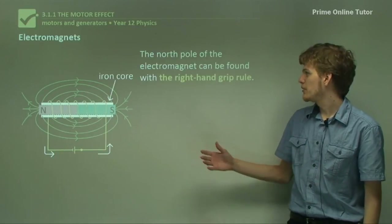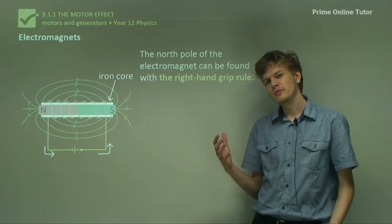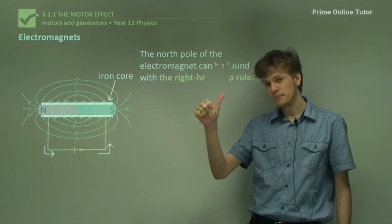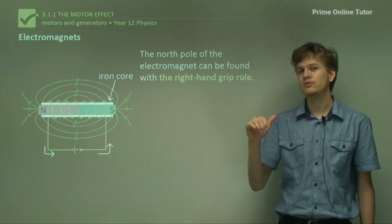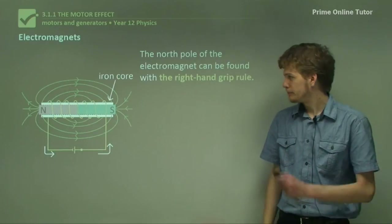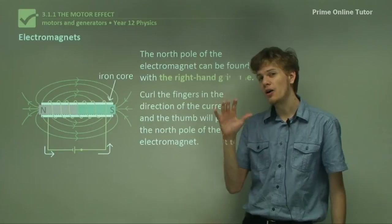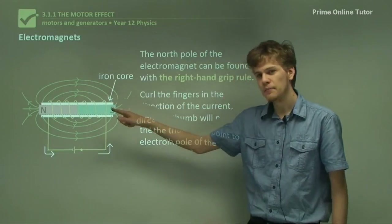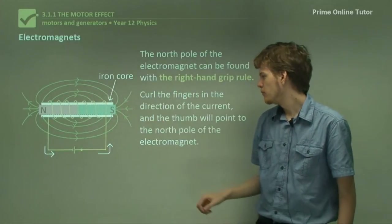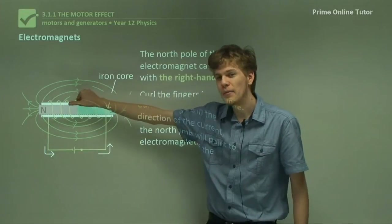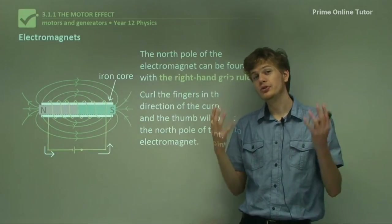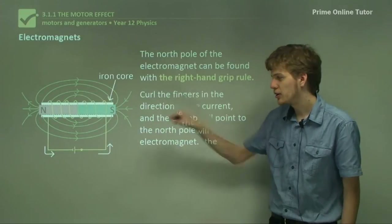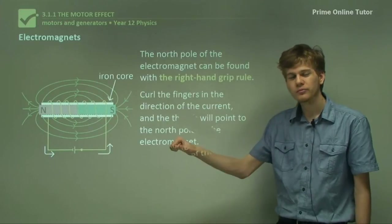The north pole of the electromagnet can be found with the right-hand grip rule. We can use the right-hand grip rule in two ways. We can either say the thumb is the direction of current and the fingers are the direction of the magnetic field lines. Or we can curl the fingers in the direction of the current — the direction of the wires in the solenoid — and the thumb points to the north pole of the magnet. So we have two uses for this right-hand grip rule: curl the fingers in the direction of the solenoid to find the magnetic pole, or point the thumb in the direction of the current to find the direction of the magnetic field. Remember, this only applies for your right hand, not your left hand.